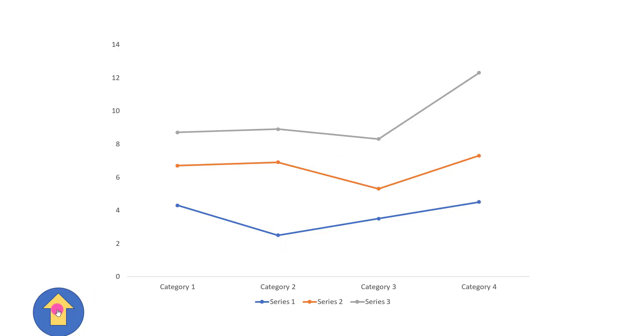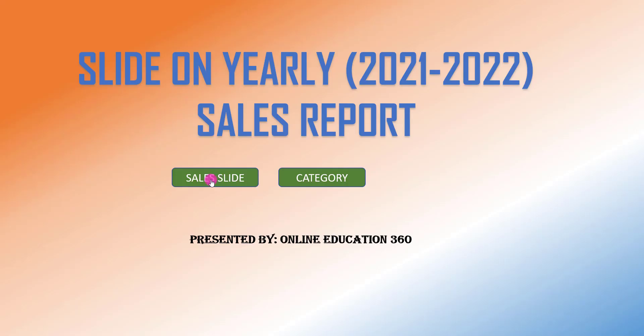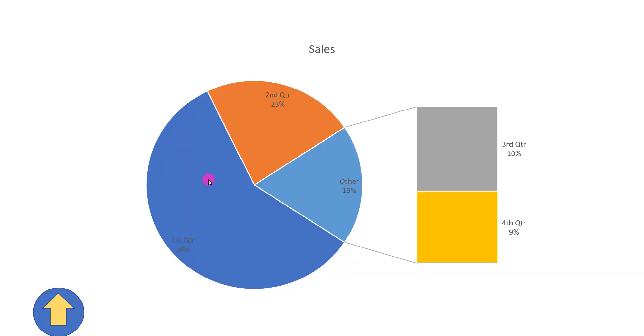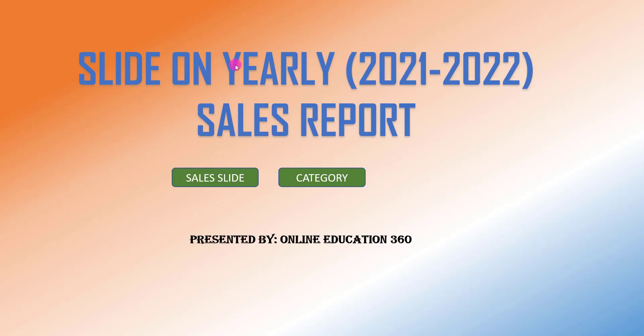Now in the slide show: clicking 'Category' goes to the category slide, clicking 'Sales Slide' goes to the sales slide, and clicking the back button returns to the first slide. I hope you found this video helpful. If you liked it, please share it with your friends and family, and don't forget to subscribe. Thank you.